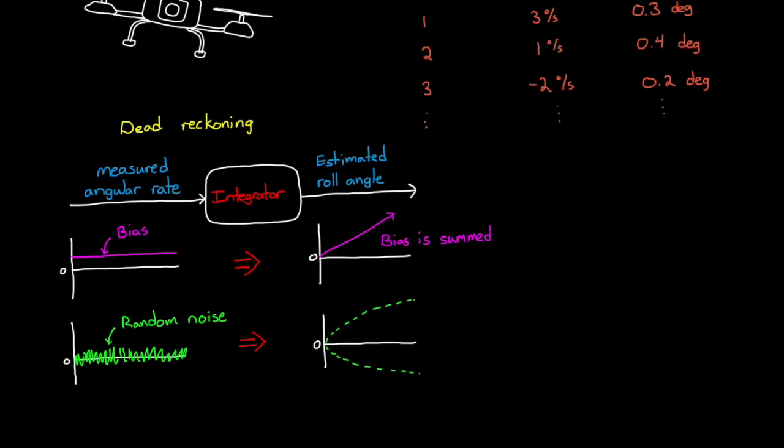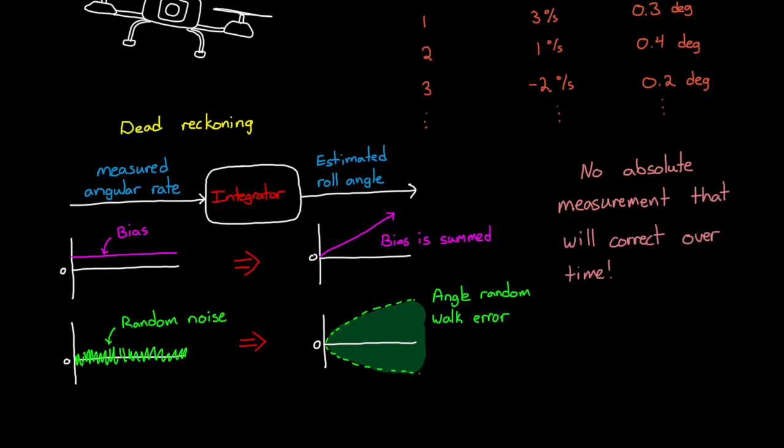When we integrate the rate measurements, any uncorrected bias in the gyro, or even just random high frequency noise, gets summed as well. And with these cumulative errors, eventually there's going to be a large difference between the true roll angle and the angle we estimate. Dead reckoning is a relative measurement, and there's no absolute measurement that will correct the roll over time.